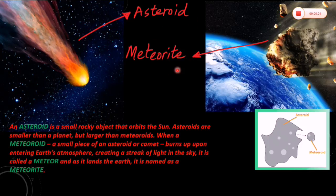So an asteroid is a small rocky object that orbits the Sun. Asteroids are smaller than a planet but larger than meteorites. When a meteorite, a small piece of an asteroid or comet, burns up upon entering Earth's atmosphere, creating a streak of light in the sky, it is called a meteor. And as it lands on Earth, it is named as a meteorite.